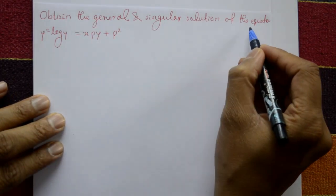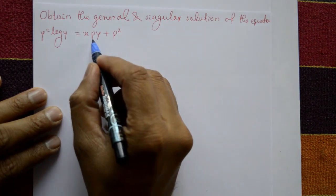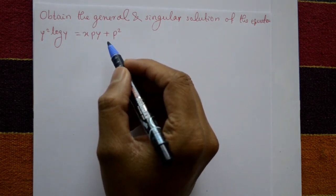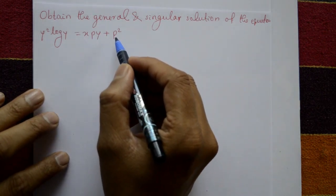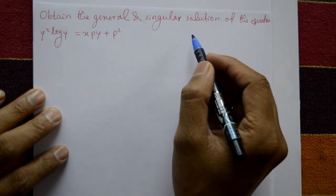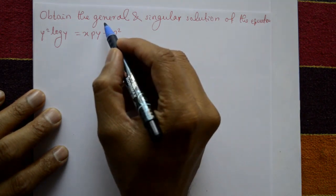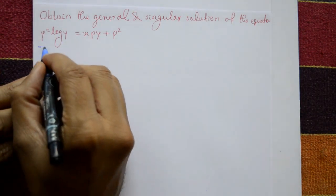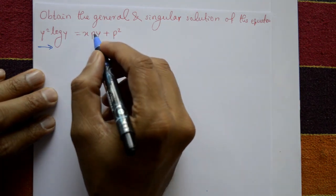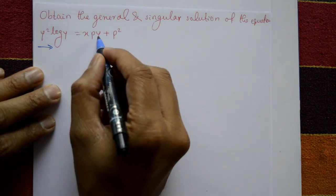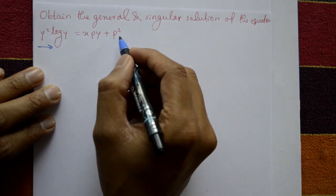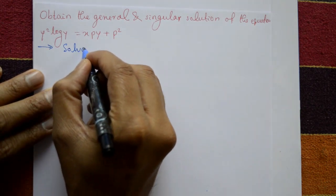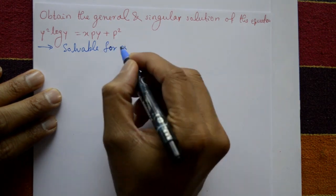Find the general and singular solution of the equation y² log(y) = xpy + p². First, check whether the given equation is expressible as y equal to, x equal to, or p equal to. Then differentiate, separate variables, and integrate to get the general solution. Differentiating partially gives the singular solution. Checking: y equal to and p equal to are not possible, but x equal to is — so the equation is solvable for x only.